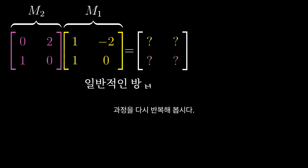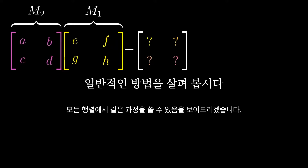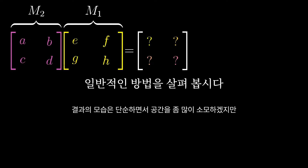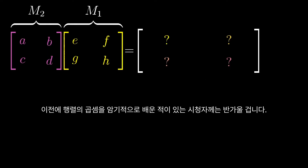Let me talk through that same process again, but this time I'll show variable entries in each matrix, just to show that the same line of reasoning works for any matrices. This is more symbol-heavy and will require some more room, but it should be pretty satisfying for anyone who has previously been taught matrix multiplication the more rote way.